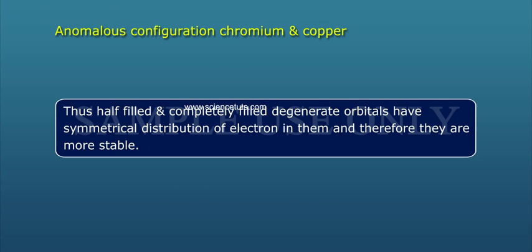Anomalous configuration: Chromium and Copper. Half-filled and completely filled degenerate orbitals have symmetrical distribution of electrons in them and therefore are more stable.